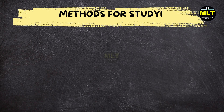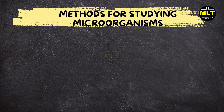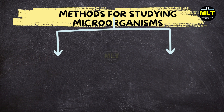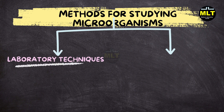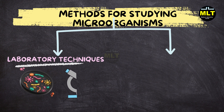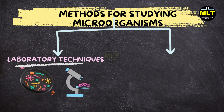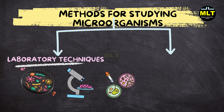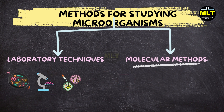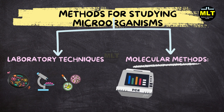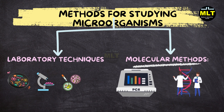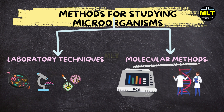Methods for studying microorganisms. Studying microorganisms involves various laboratory techniques. Common methods include culturing microbes on selective media, staining for visualization under a microscope, and isolating pure cultures for further analysis. Advanced molecular techniques like PCR (polymerase chain reaction) and metagenomics allow scientists to study microbial communities and identify species based on their genetic material.